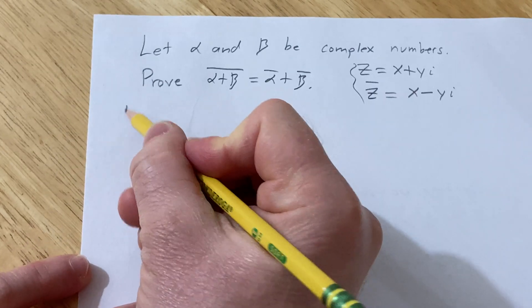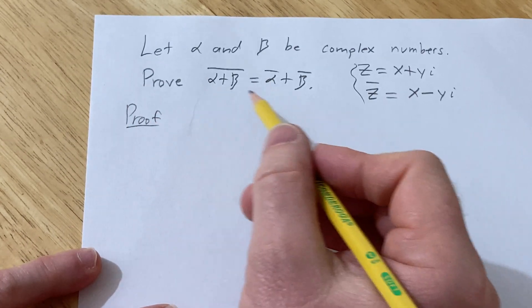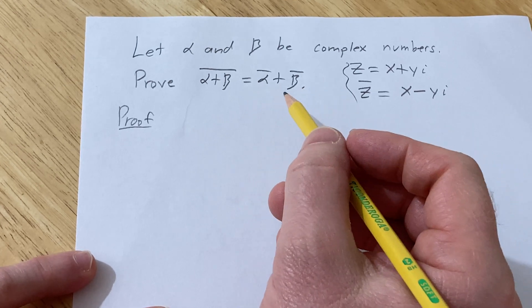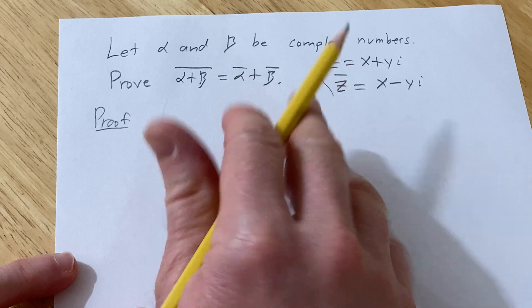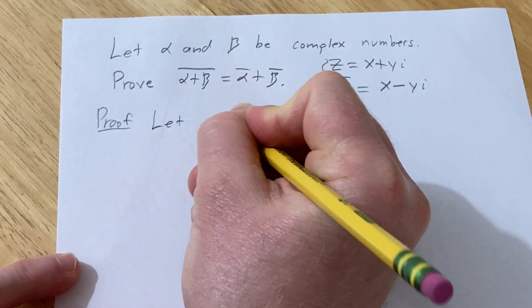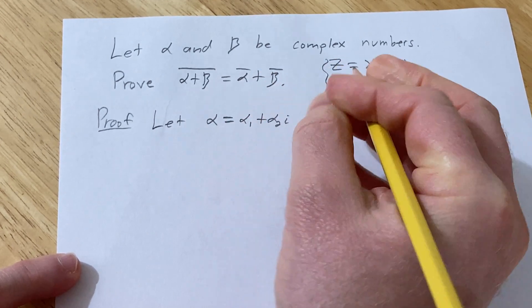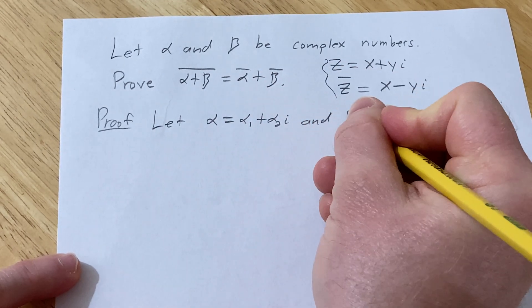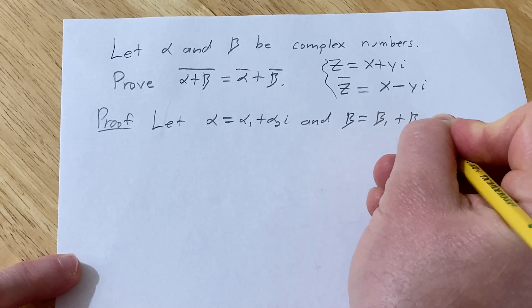So here we have to do this proof. We'll start by writing out alpha and beta as complex numbers. In particular, we're going to write them explicitly so we have their real and imaginary parts written down. So let alpha equal alpha sub 1 plus alpha sub 2i, and beta equal beta sub 1 plus beta sub 2i.